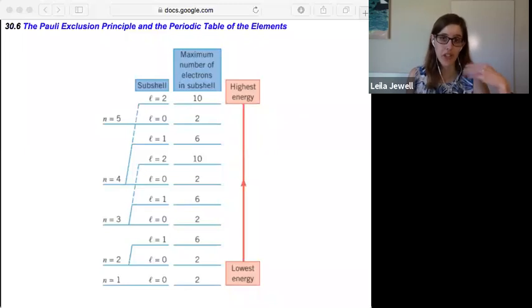It's only when l starts to become larger, like when l is equal to one, now m sub l could be negative one, zero, or positive one. And so that introduces three with two states within each of those. It introduces six possible states. And so it increases as your l gets larger, you're going to get more possible electrons within a subshell.